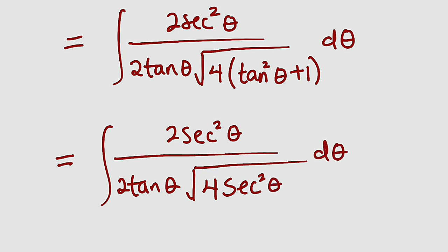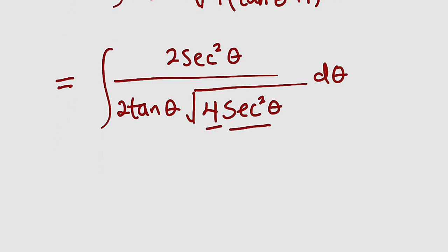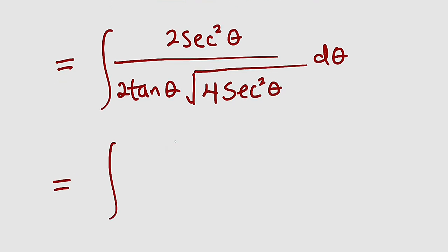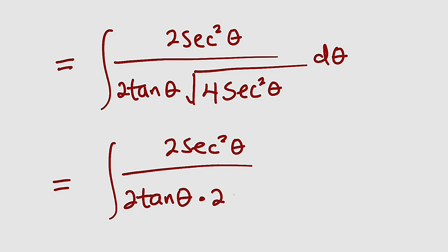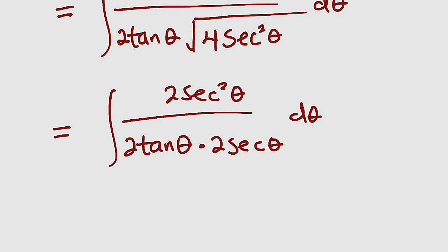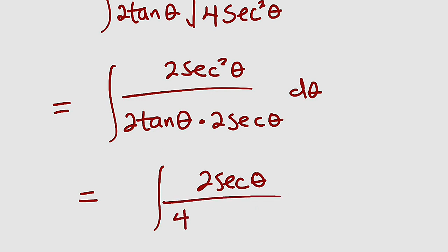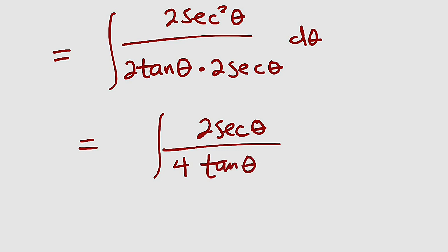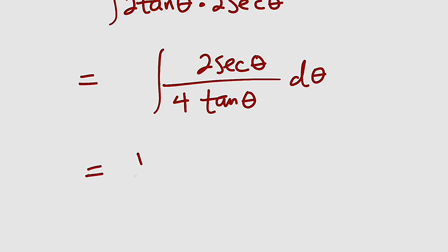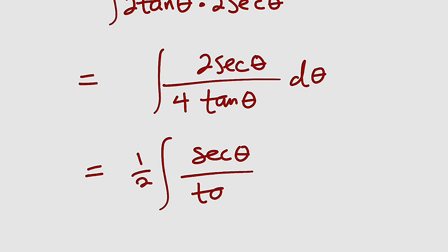Remember we have d theta here. The square root of 4 is 2, and the square root of secant squared theta gives us secant theta. So this equals the integral of 2 secant squared theta divided by 2 tan theta, multiplied by 2 secant theta d theta. From top to bottom, we have a secant theta in common, so we cancel one. The numerator is left with 2 secant theta, and the denominator is 2 times 2, which is 4, times tan theta. So 2 over 4 is 1 over 2, a constant we can bring out.